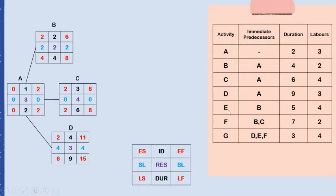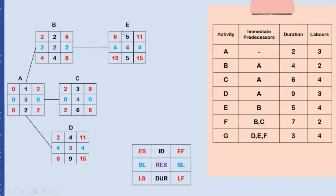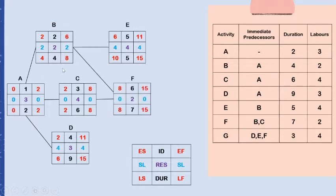To proceed to activity E, we need to complete activity B first. So the earliest start of activity E is six and the earliest finish is eleven, from six plus five. For activity F, the immediate predecessors are B and C, so both must be complete before F can start. The earliest start of activity F is day eight, even though B finishes on day six, because C does not complete until day eight.